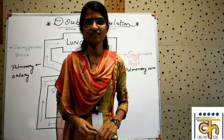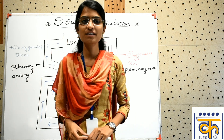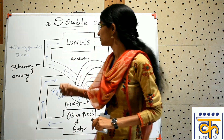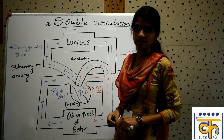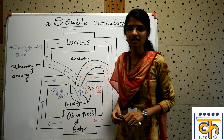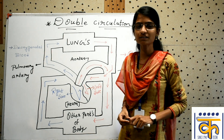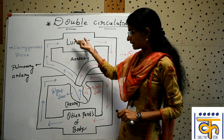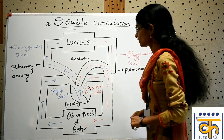After studying the internal and external structure of heart, we will now be studying about the double circulation in the human heart. Double circulation in the human heart occurs as a result of it exchanging blood with the lungs as well as with the other body parts.